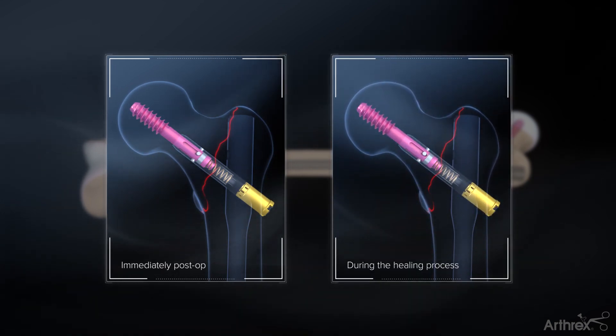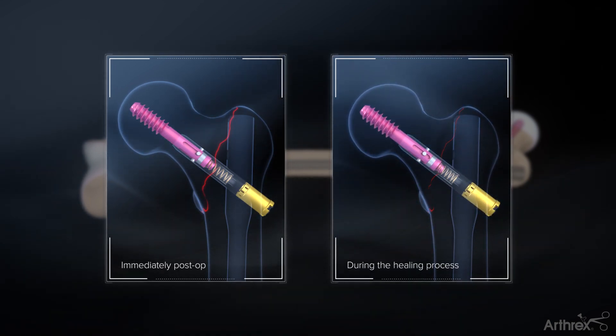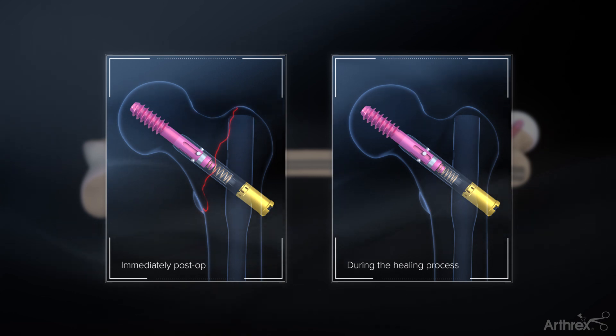As the fracture begins to heal, the telescoping lag screw is able to compress up to 10 mm without any lateral protrusion into the surrounding tissue.